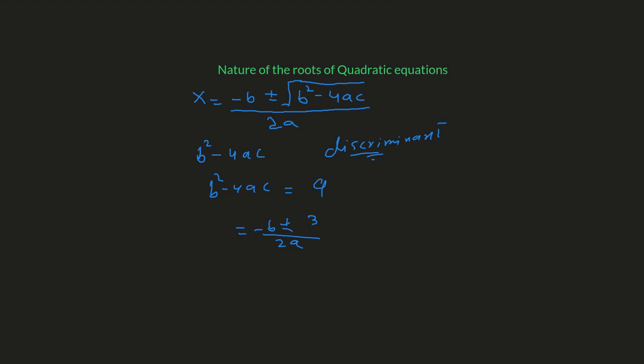Since a and b are simply real numbers, after plugging in 9 under the radical we get a term like negative b plus or minus 3 over 2a. This means we get real numbers, because b and a are also real numbers. Because of the plus and minus, for the plus we get one real number and for the minus we get another real number.